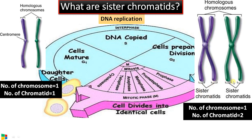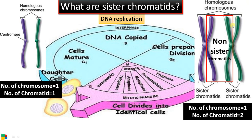Chromatids of different chromosomes in the homologous pair that are genetically different make the non-sister chromatids. These non-sister chromatids are genetically different because one comes from the father and the second comes from the mother. Remember, during meiosis, crossing over — the exchange of gene segments — takes place between non-sister chromatids of homologous chromosomes, leading to genetic recombination and genetic diversity in offspring.